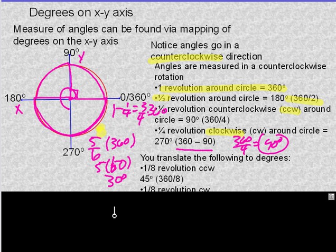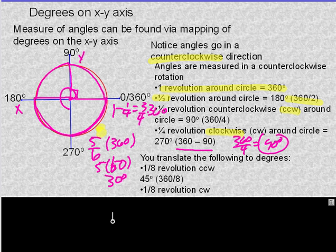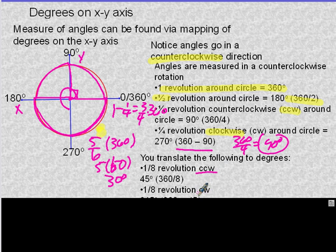Here are some you should try on your own. One-eighth of a revolution — the answer is already shown. This is counter-clockwise. See if you can figure out what it is clockwise, and try a few more examples.